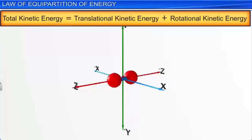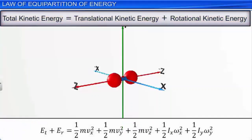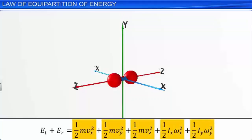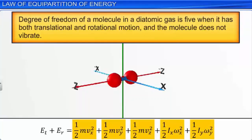The total kinetic energy is Et + Er = (1/2)mvx² + (1/2)mvy² + (1/2)mvz² + (1/2)Ix·ωx² + (1/2)Iy·ωy². In this expression, the number of independent terms is 5. So the degree of freedom of a molecule in a diatomic gas is 5, when it has both translational and rotational motion and the molecule does not vibrate.